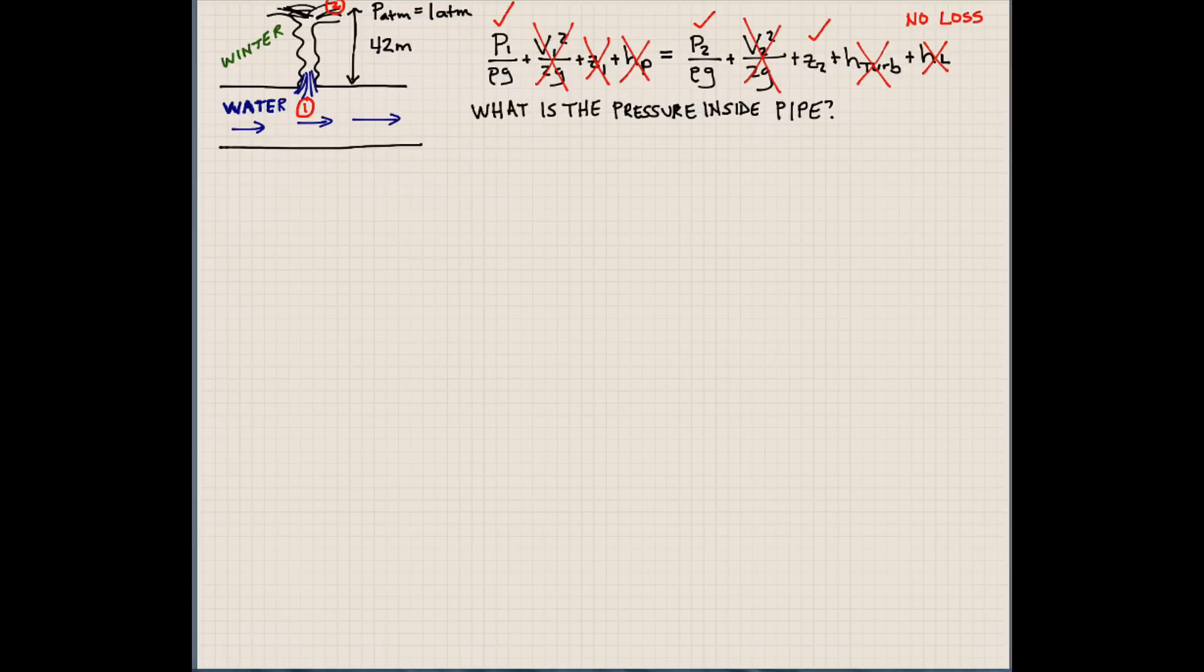So what's our equation here that we're going to deal with? P1 over rho g is equal to P2 over rho g plus z2. So, obviously we could rewrite this as P1 is equal to P2 plus rho g z2.